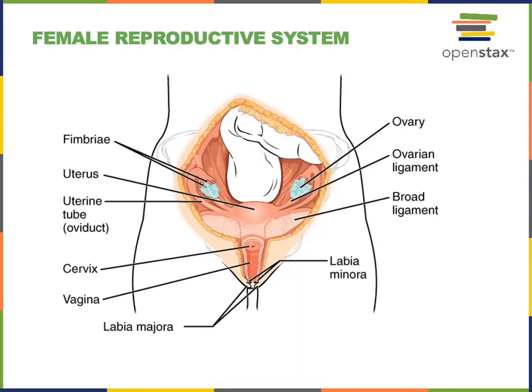The female gonads, known as the ovaries, are responsible for producing the ova and the sex steroid hormones estrogen and progesterone. The ovaries are a pair of oval-shaped organs located within the pelvic cavity. Each is around 2–3 cm in length, approximately the size of an almond.